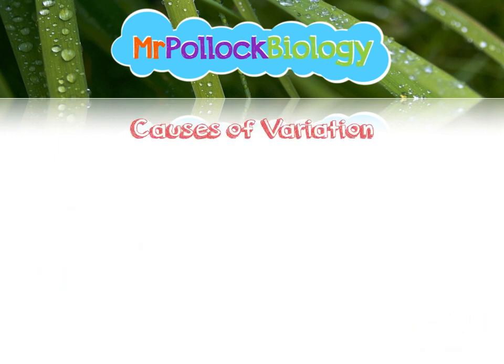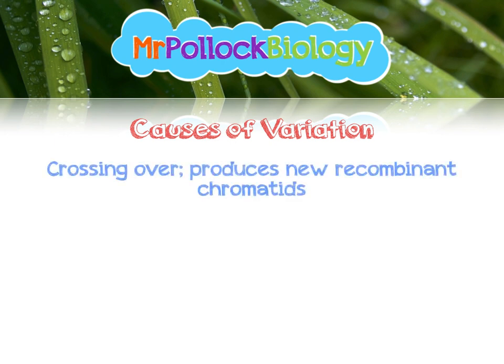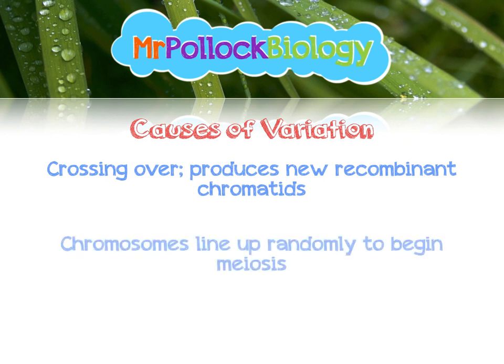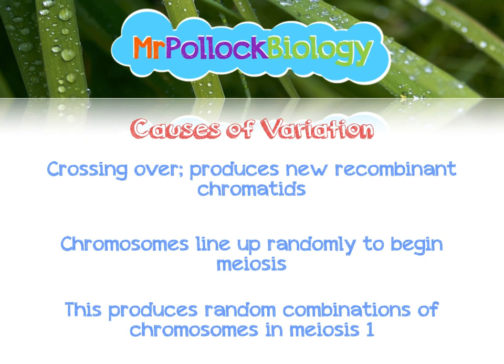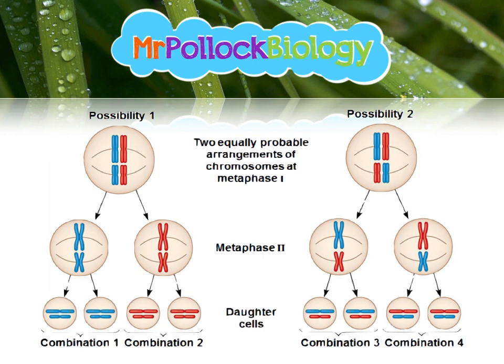The causes of variation. The first we discussed in most detail was crossing over, which produces new recombinant chromatids with new combinations of alleles on each chromatid. The second factor is the way chromosomes line up randomly, which defines which chromosomes get pulled into which cells at meiosis 1, giving a random combination of chromosomes. This is independent assortment or independent segregation. The best way to explain this is with a diagram.